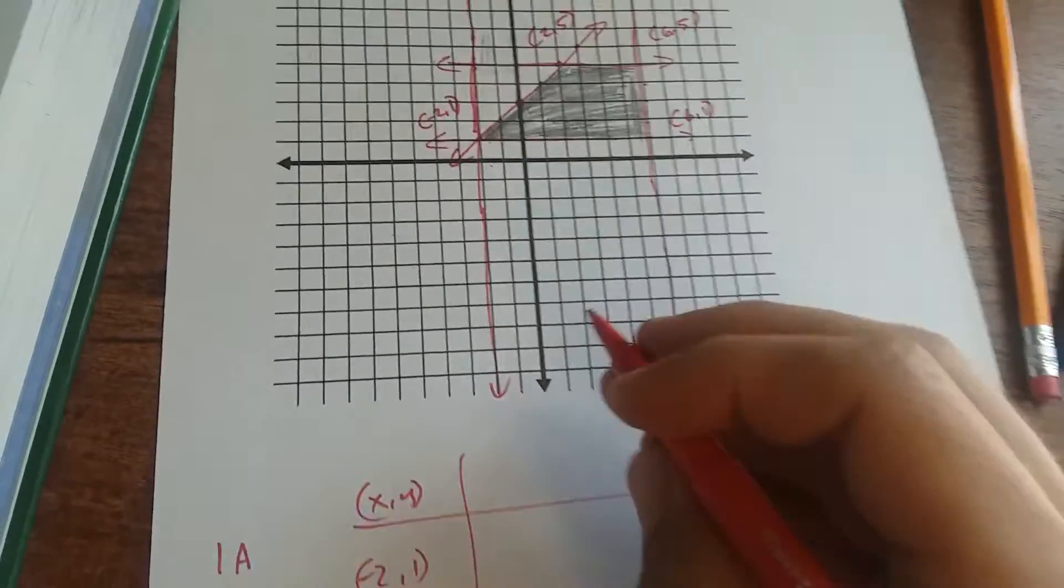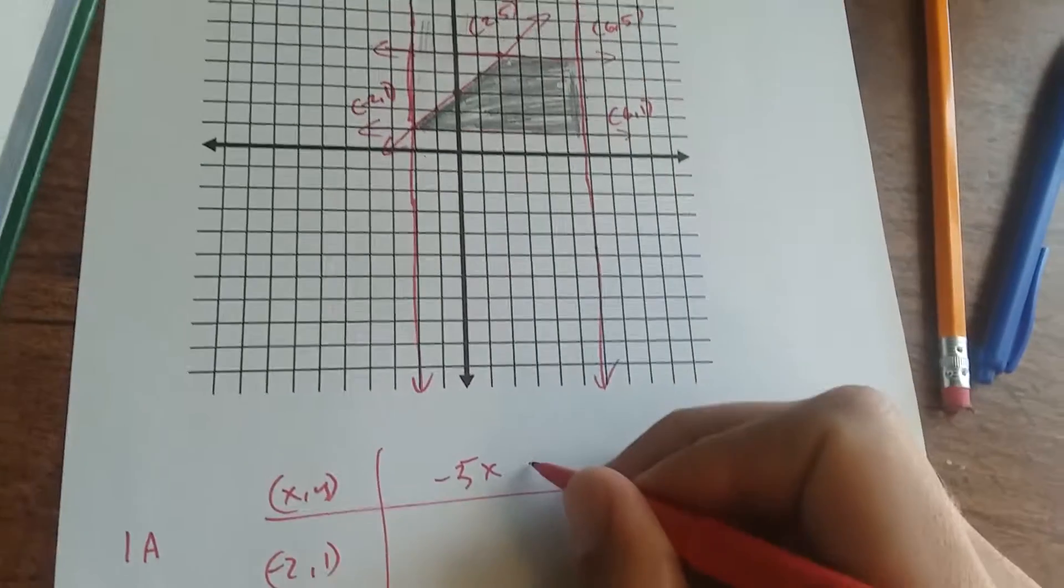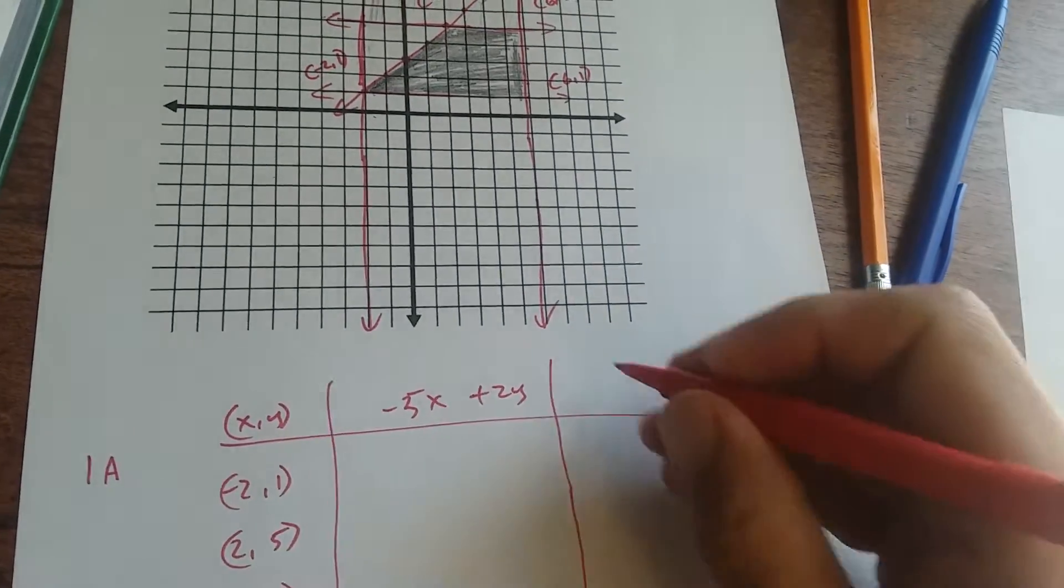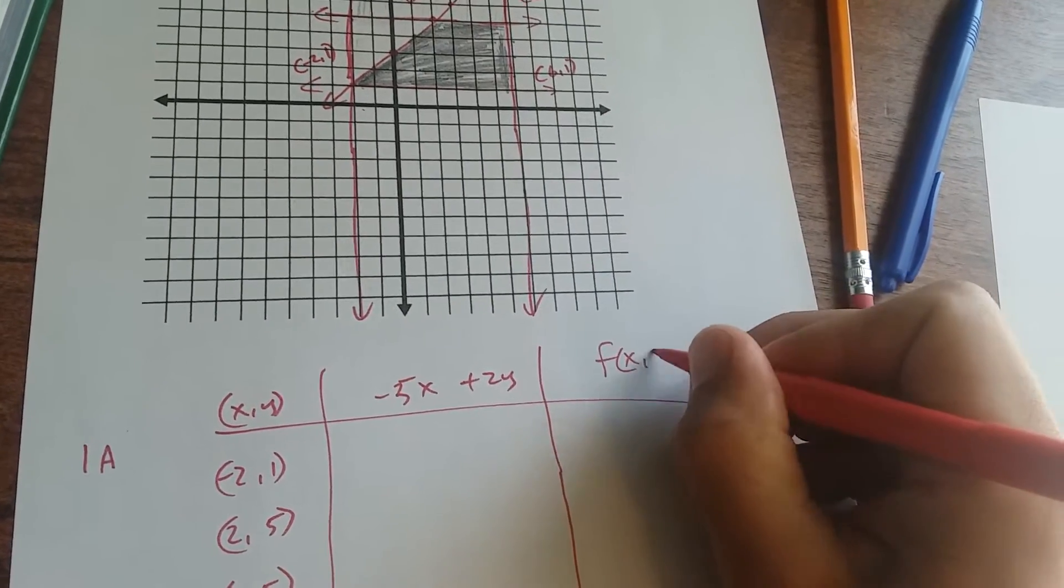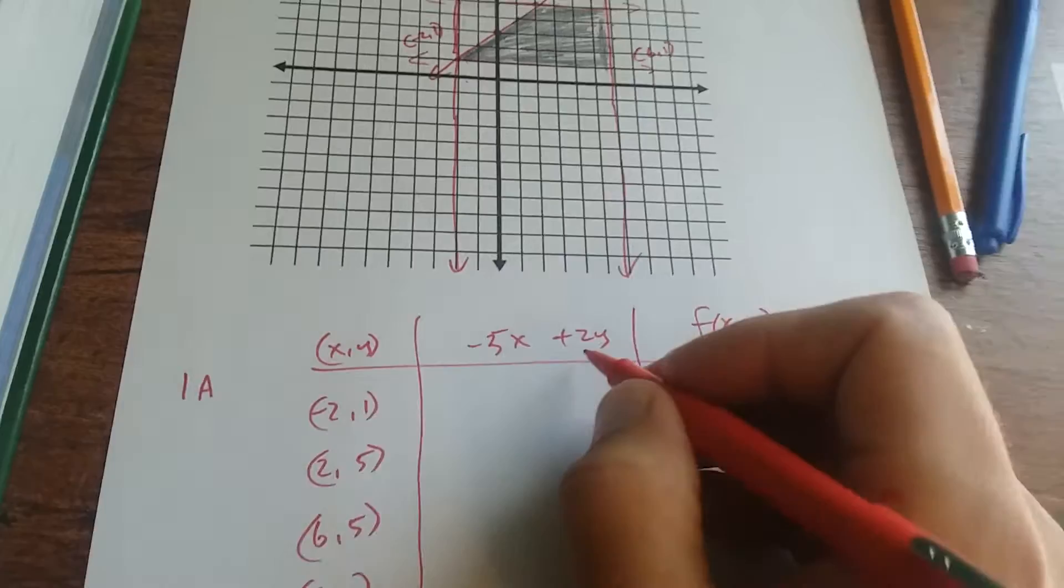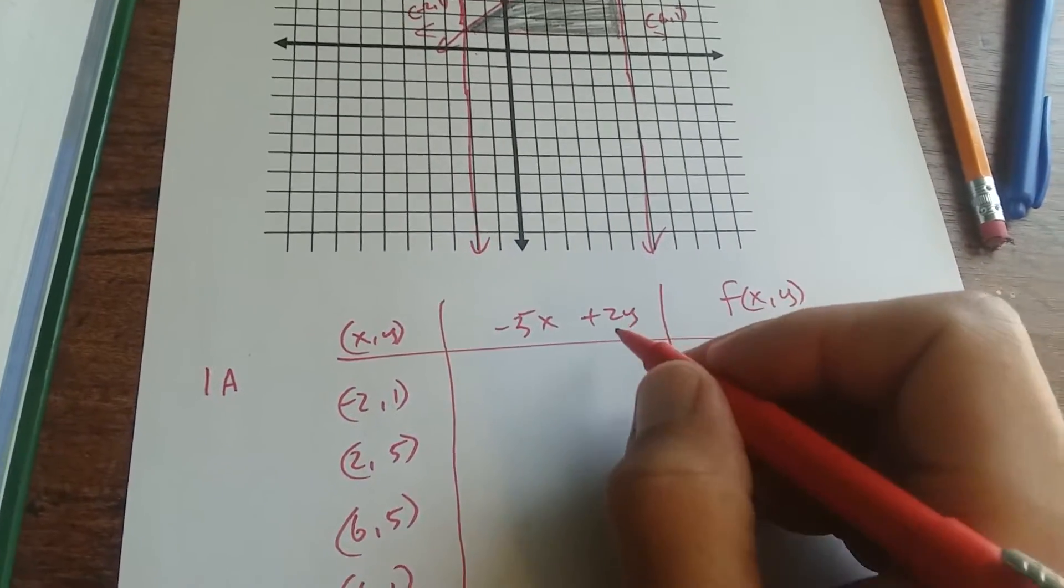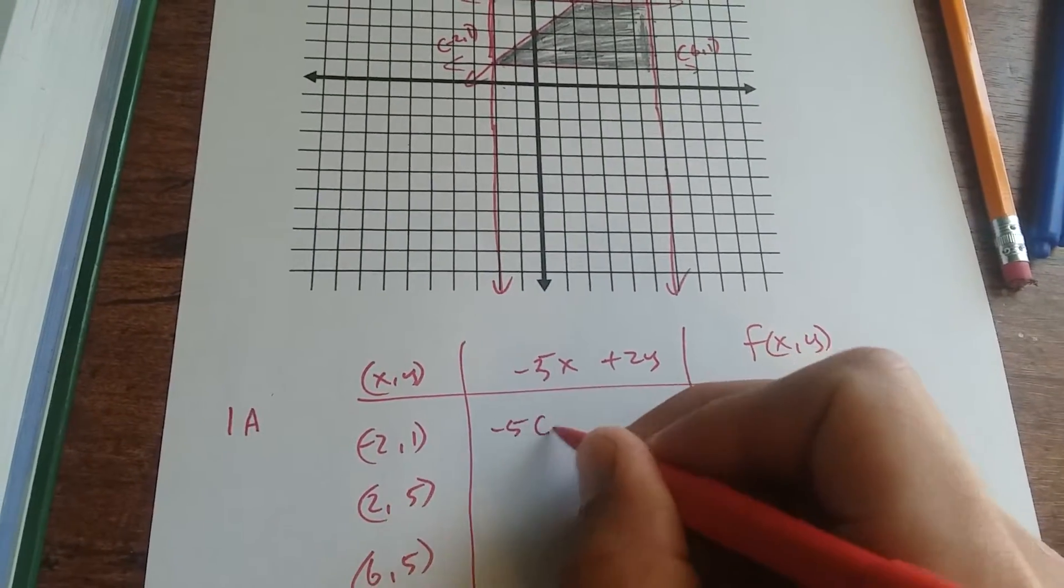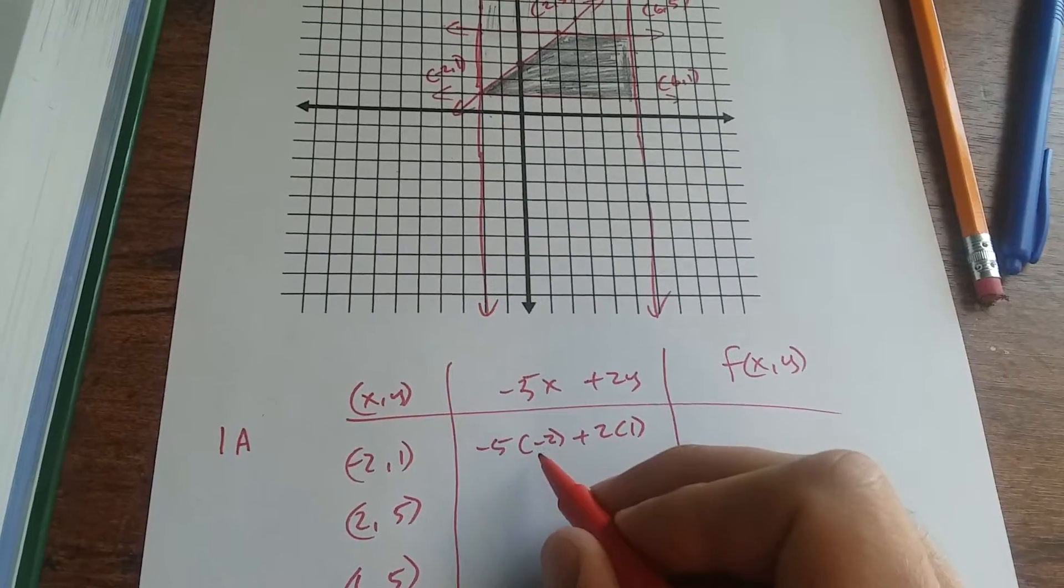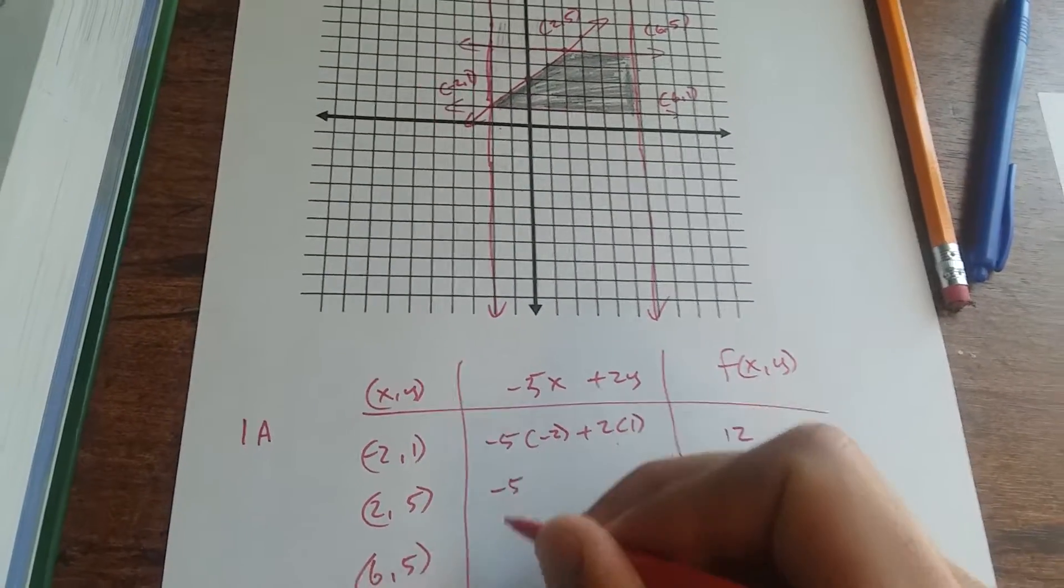Your function is negative 5x plus 2y, and then you have your f of x, y. So you're going to times the x value by negative 5 and times the y value by 2 and add them together. So you have negative 5 times negative 2 plus 2 times 1. You get 10 plus 2 is 12.